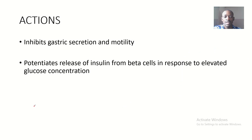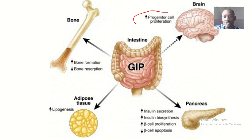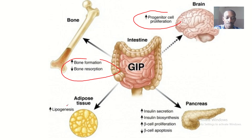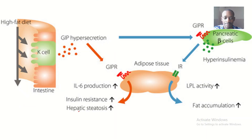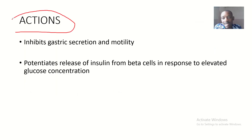From these images we can see the action of gastric inhibitory peptide. The action on the brain is progenitor cell proliferation. The action on bone is bone formation and bone resorption. The action on adipose tissues is increasing lipogenesis. Now let's look at the action of gastric inhibitory peptide on the GIT.